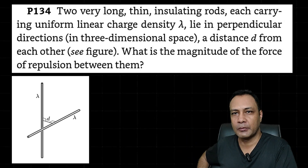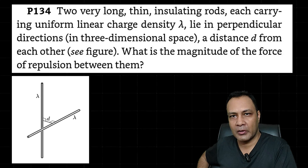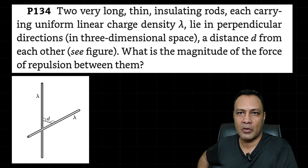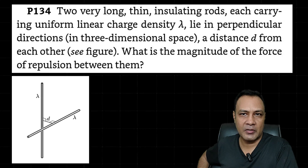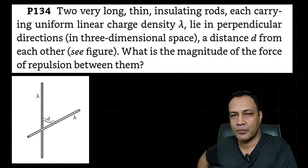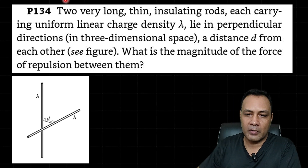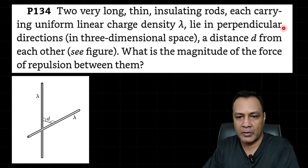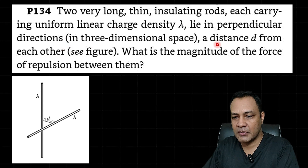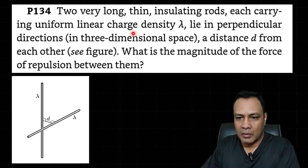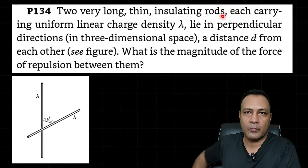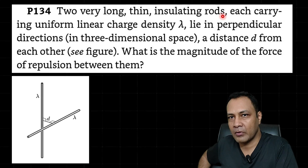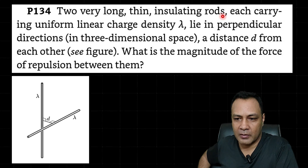Hey all dear friends, this is Prajesh Chaudhary, your quantum guru. Let's see this very beautiful question of electrostatics from '200 More Puzzling Problems of Physics.' There are two long uniformly charged skew rods having the same linear charge density, separated by distance d. They are insulating rods — because of their insulating nature, the charge distribution will not change due to the presence of each other. We have to find the magnitude of the force of repulsion between them.